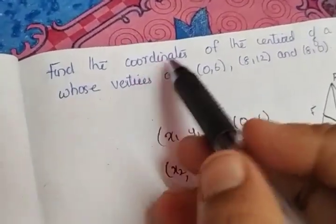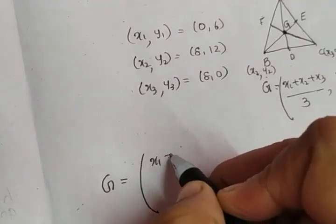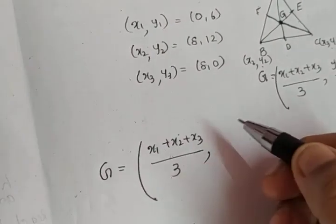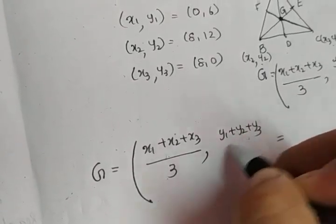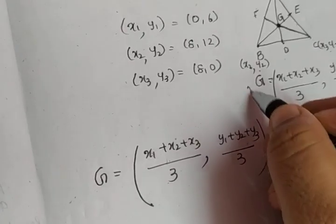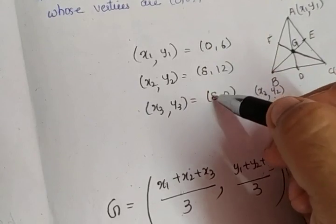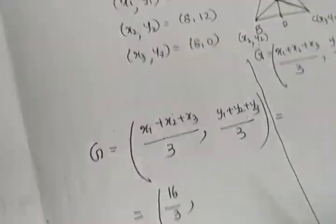The question is to find the coordinates of the centroid. So, G will be equal to, write the formula. What's the formula? (X1 + X2 + X3)/3, that will be the X coordinate, and (Y1 + Y2 + Y3)/3, that will be the Y coordinate. So, that is equal to sum of the X coordinate: 0 + 8 + 8. That is, 8 + 8 gives you 16/3 will be the X coordinate.